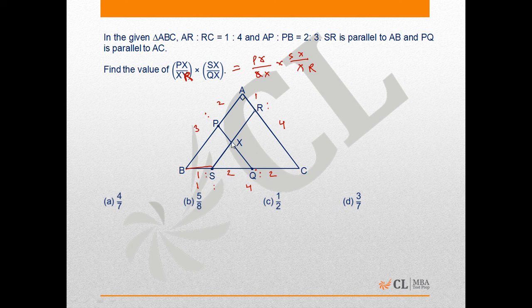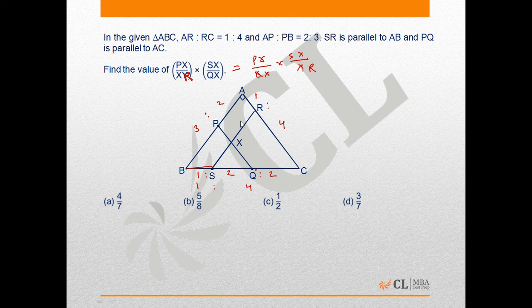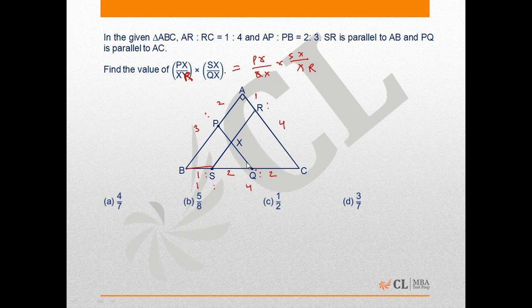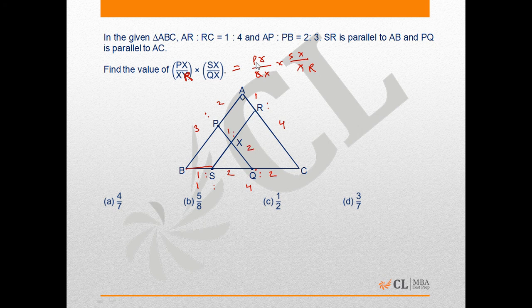Right, so this is the ratio. Now we need to find PX upon QX. You can use the same concept in triangle PQB. This side is parallel to this. This ratio is 1 to 2. This ratio has to be 1 to 2. That means the value of PX upon QX is nothing but 1 by 2.